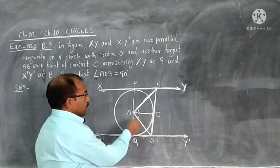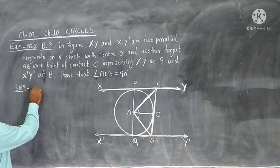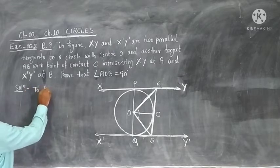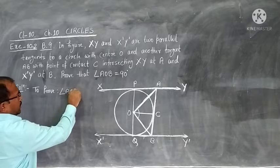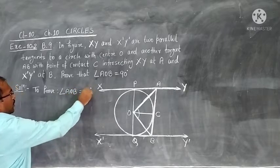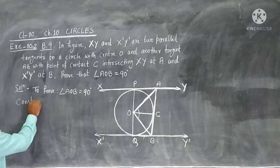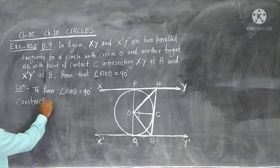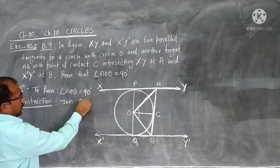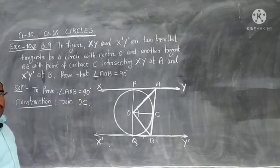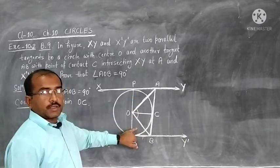After joining OC, we write in the proof that we need to prove angle AOB is 90 degrees. Construction: we join OC. After joining OC, we can see there are four triangles formed.